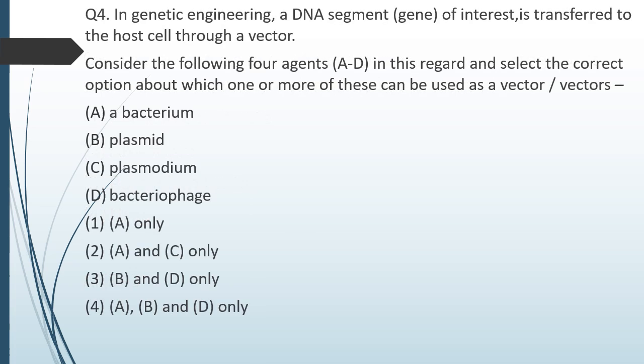Question number four: in genetic engineering, a DNA segment or gene of interest is transferred to a host cell through a vector. Consider the following four agents and select which one or more can be used as a vector — bacterium, plasmid, plasmodium, bacteriophage. The correct answer is option three: plasmid and bacteriophage can be used as vectors.